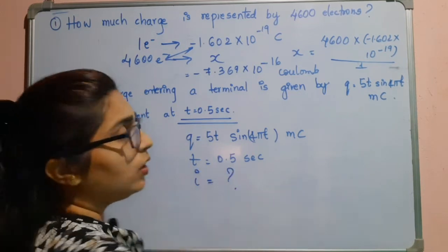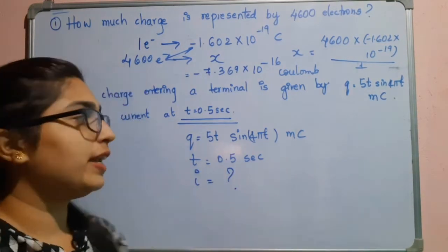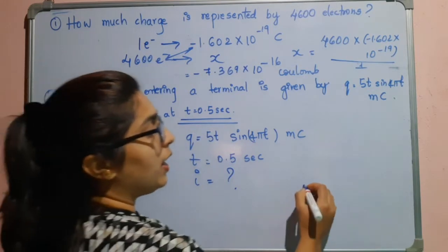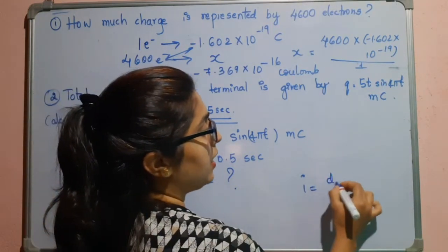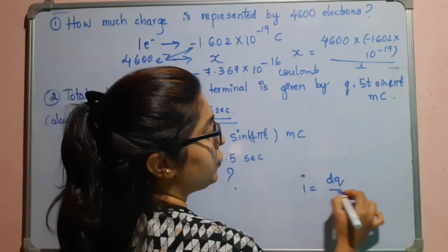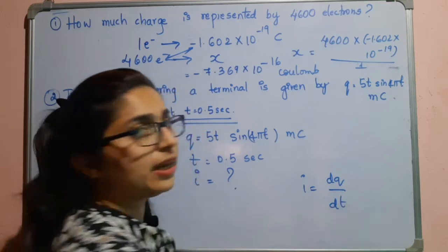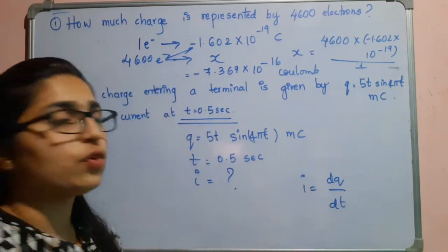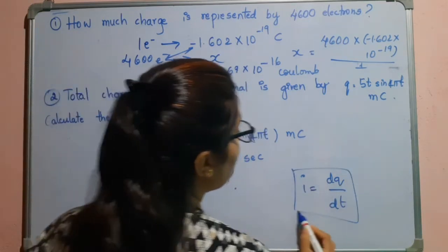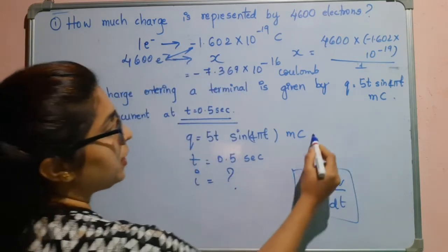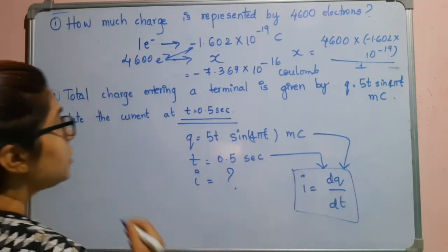We have to find i. You know the relation: electric current is nothing but the rate of change of charge, that is dq/dt. Now we have to substitute this in the given formula.